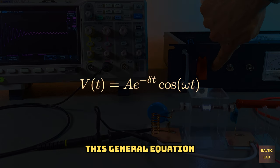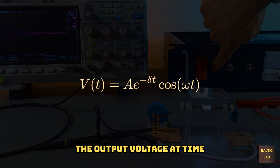This general equation for characterizing damped harmonic oscillators, be it a spring, a pendulum, or an LC tank circuit, can be used to describe the output waveform. V of t is the output voltage at time t, a the initial amplitude, delta the decay rate, omega the angular frequency, and t the time in seconds since the spark gap has last fired.